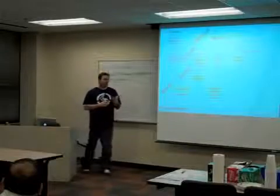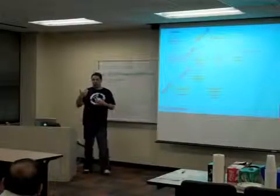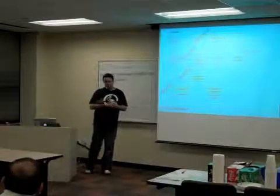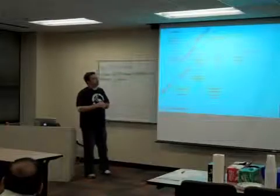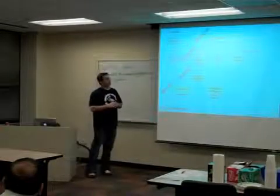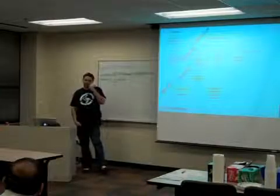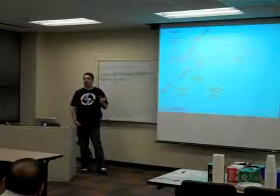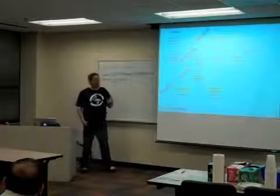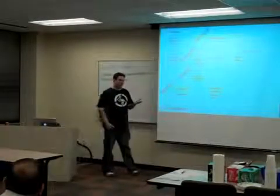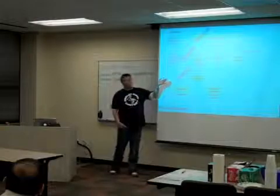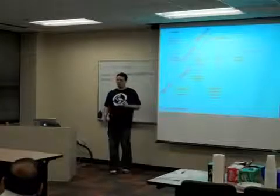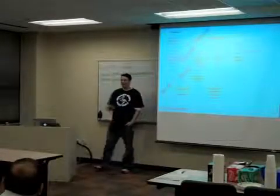The JBPM console also allows you to see visually at what point your process is currently, so you can monitor that. You can also see the current state of information. Another thing the JBPM console allows is reporting. We use Eclipse BIRT and provide some reports that we think might be useful to users, and you can plug in the history log and query information from existing systems to come up with reports that make sense to you.